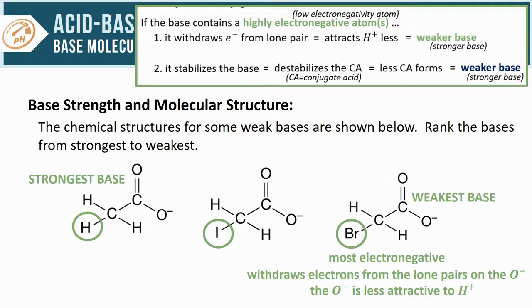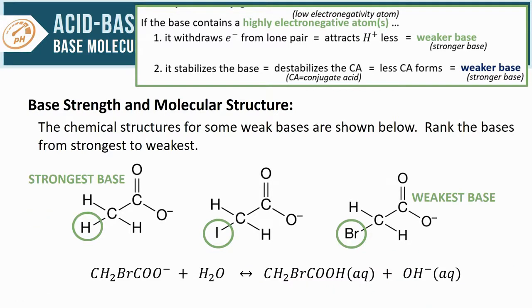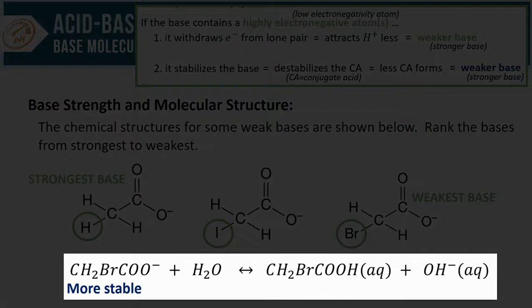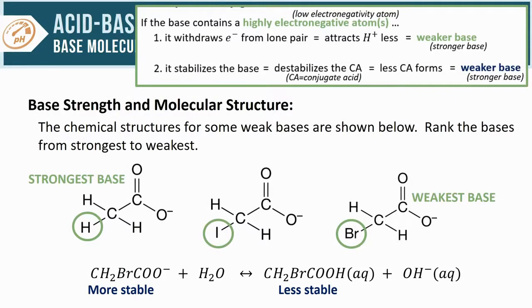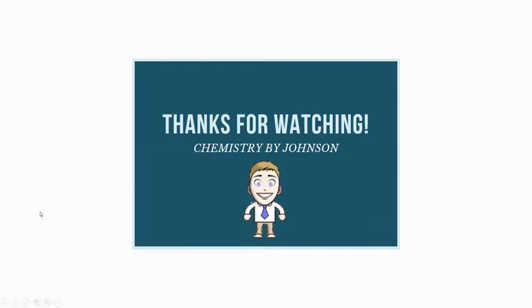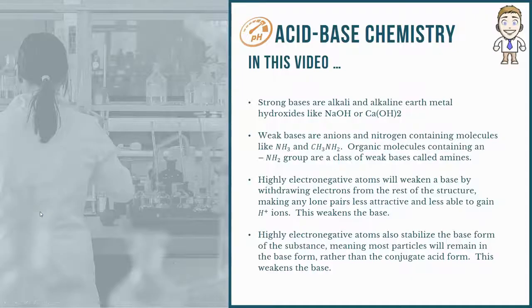You could also explain this in terms of stability. If you wrote out the hydrolysis reaction, the base form that contains bromine is going to be more stable because of that electronegativity, while the conjugate acid will be less stable. So you will produce less of the products for that particular base, and hence it is weaker. That also wraps it up for this video on base strength and molecular structure. Thanks a lot for watching, and here is a brief summary.